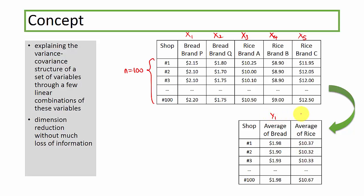Now suppose we transform this data to find the average price of bread and rice. Let's call them y1 and y2. So y1 is the average price of the bread, which means to find y1, I will take the price of bread brand P and the price of bread brand Q and average them. So that will be half of x1 plus half of x2. As for y2, y2 is the average price of rice. So I'm taking the rice brand A, rice brand B, and rice brand C and average them up. So y2 is essentially one third of x3 plus one third of x4 plus one third of x5.